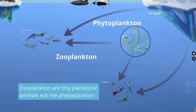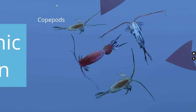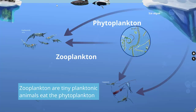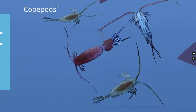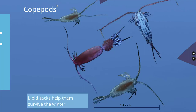Zooplankton are invertebrates — animals without a backbone. There are many different kinds and sizes which are capable of eating different types and sizes of phytoplankton. In the Arctic, the zooplankton community is dominated by numerous different species of copepod and krill. Adult copepods are about a quarter inch long and have a fatty lipid sac which stores energy. During the Arctic winter, there is very little for phytoplankton to eat, so copepods enter a kind of hibernation state deep in the ocean. The lipid sac helps them survive until they wake up in the spring and feed on phytoplankton and ice algae, and it also makes them a very desirable energy-rich food source for higher trophic levels.